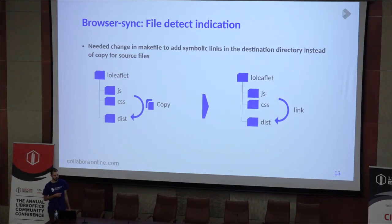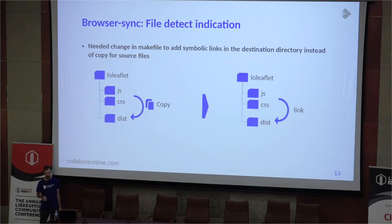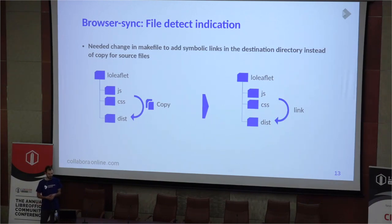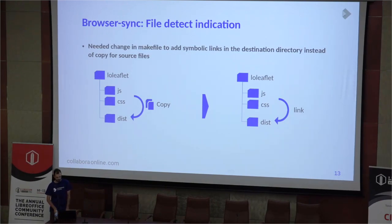To integrate this into Online I needed to add some changes to the make files. Before, we copied source files from the original files to the destination directory where files are served. But that doesn't work because when you modify something in the original file, it doesn't detect that change because it's a different file from the one being served. And if we modify something in the destination directory, it's not tracked by git, so we can't commit that easily. So I modified the make file to create a symbolic link to the original files instead of copying, when BrowserSync is enabled.